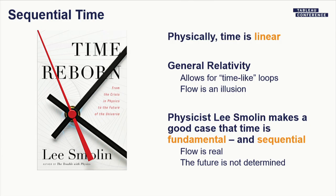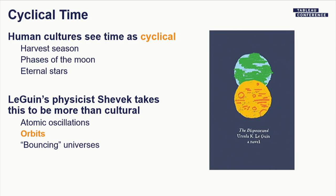Most humans aren't physicists. Human cultures have taken a different approach, often seeing time as cyclical — harvest seasons, phases of the moon, stars returning to the same place. Ursula K. Le Guin's novel The Dispossessed has a physicist main character who notices that cyclical things — atomic oscillations, planetary orbits — exist in the real world, and his job is to unite the linear and cyclical forms of thinking about time. That's sort of what I'm trying to do here today.